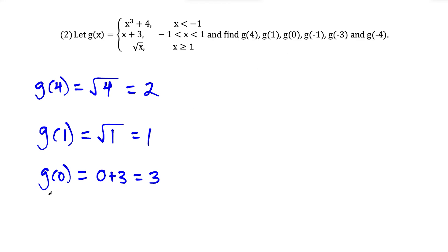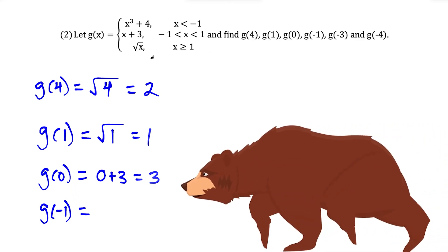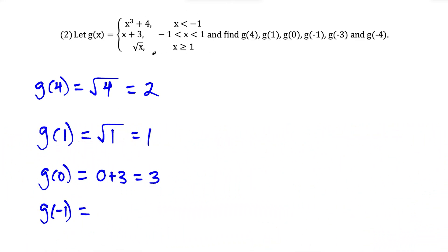For g of negative one, we check: is negative one between negative one and one? That's not true. Is negative one less than negative one? Also not true. And negative one is not greater than or equal to positive one. So negative one doesn't satisfy any of these inequalities, and g of negative one is undefined.